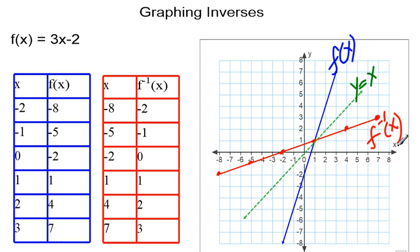If you stare close enough, you can see that when you reflect the blue line across the y = x line, you get the red f inverse of x line. That is it. That's the relationship between the two.